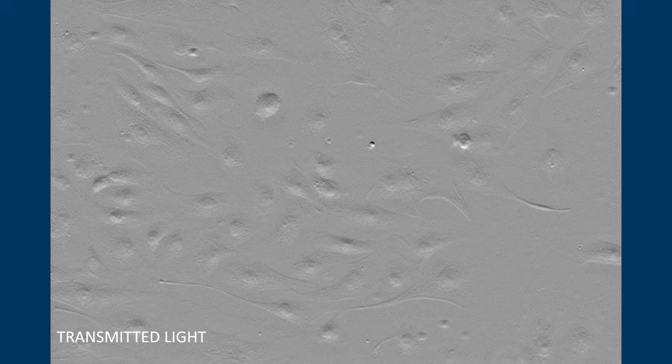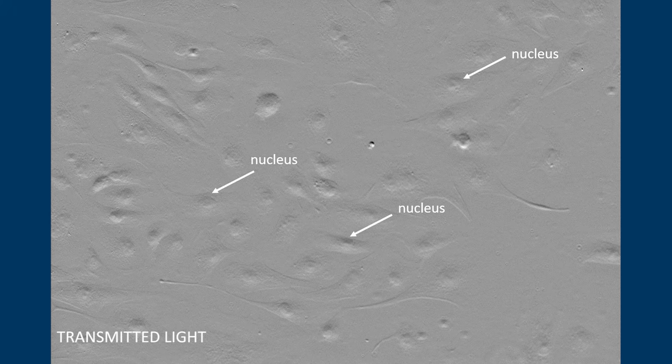So let's take a transmitted light image of these cells here. In our transmitted light image we can see our cells and we can even see some subcellular structures like the nucleus.